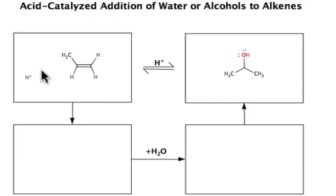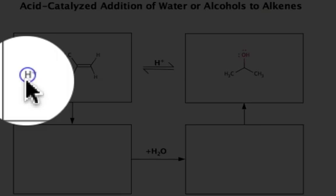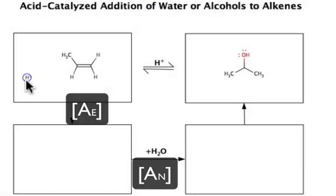What I could see is that my electrophile is this proton, and since it doesn't have any lone pairs, I know that this electrophilic addition to an alkene will consist of an A sub E followed by an A sub N step.